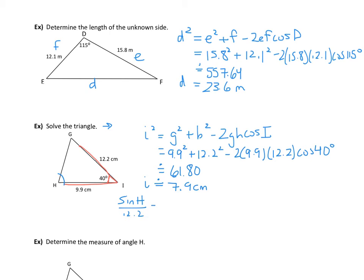The sine of angle H over H, which is 12.2, equals the sine of angle I divided by 7.9 — that's the complete ratio we now have. Calculating: H equals 83 degrees and G equals about 57 degrees.